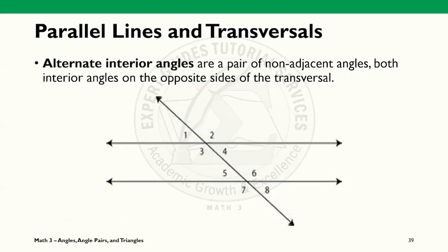Alternate interior angles are a pair of non-adjacent angles bound by the parallel lines and lie on the opposite sides of the transversal line. Angles 3 and 6 and angles 4 and 5 are both alternate interior angles.